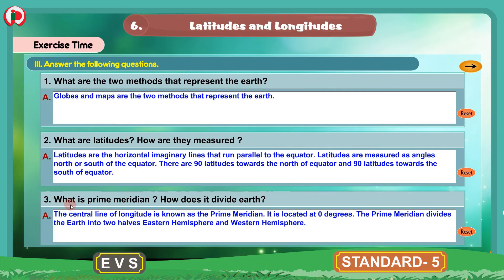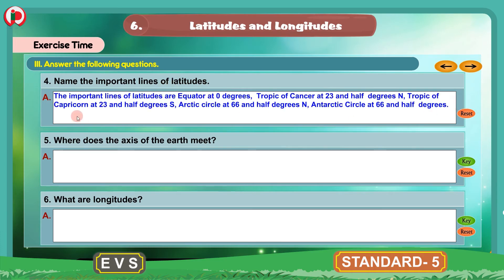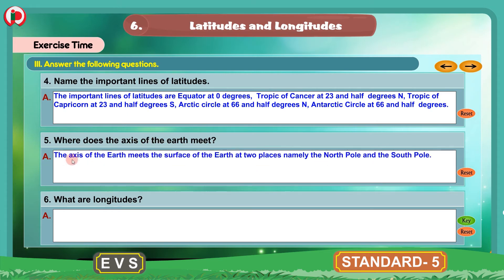Now we will move to the next question. Question 4: Name the important lines of latitudes. The important lines of latitudes are: Equator at 0 degrees, Tropic of Cancer at 23.5 degrees north, Tropic of Capricorn at 23.5 degrees south, Arctic Circle at 66.5 degrees north, and Antarctic Circle at 66.5 degrees south. Question 5: Where does the axis of the earth meet? The axis of the earth meets the surface of the earth at two places: the North Pole and the South Pole.